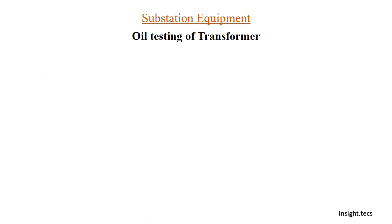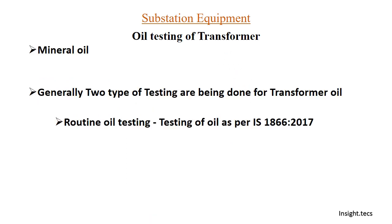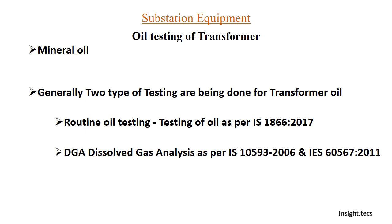For mineral oil, there are generally two types of testing for transformer oil. The first is called routine oil testing, done as per IS standard 1866:2017. The second is dissolved gas analysis (DGA), done as per IS standard 10593:2006 and IS 60567:2011.